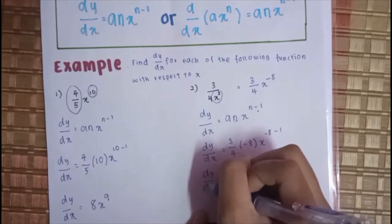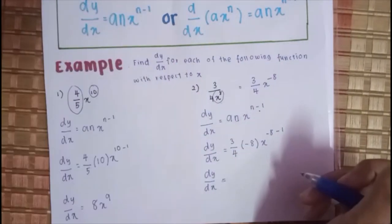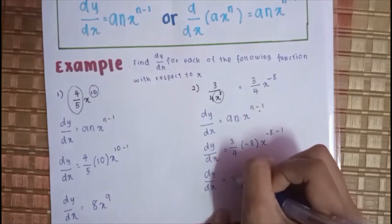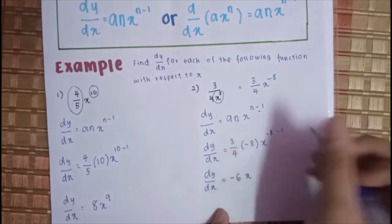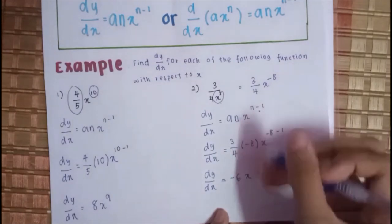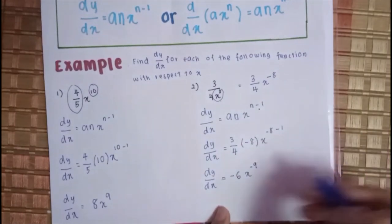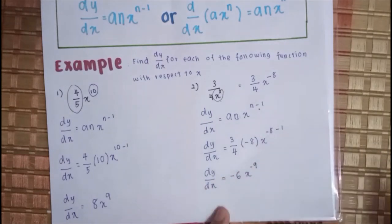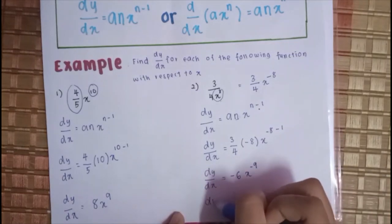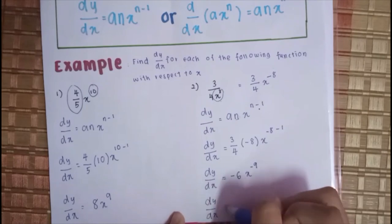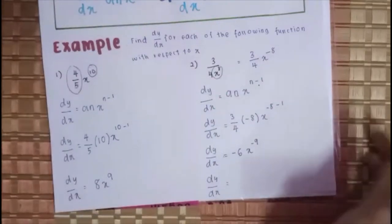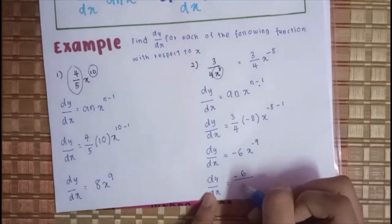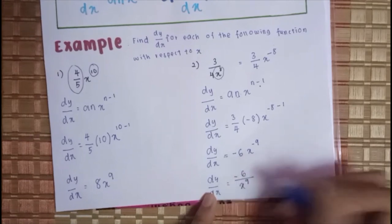DY per DX sama dengan 3 per 4 negatif 8 dapat negatif 6, X negatif 8 negatif 1 jadi negatif 9. Tapi ni bukan jawapan akhir kita. Kita kena tukar balik X ni, bawa jadi ke bawah. Jawapan dia akan jadi DY per DX sama dengan negatif 6, kita bawa turun per X 9.